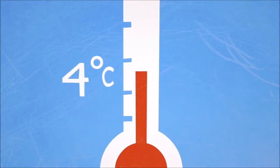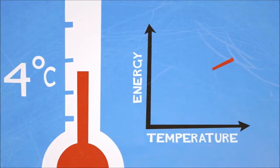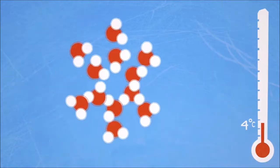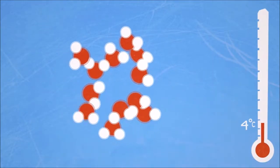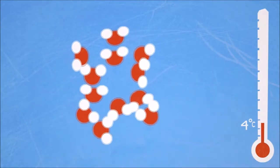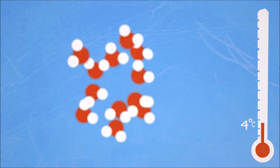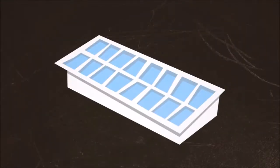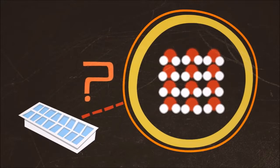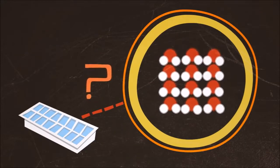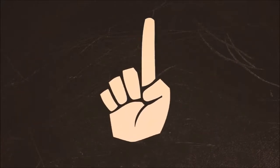At 25 degrees Celsius, water molecules are bending, stretching, spinning, and moving through space. Lowering the temperature reduces each molecule's kinetic energy, so they move less and take up less space on average. You'd think the molecules would just pack more closely as water starts to freeze - but that's not what happens.